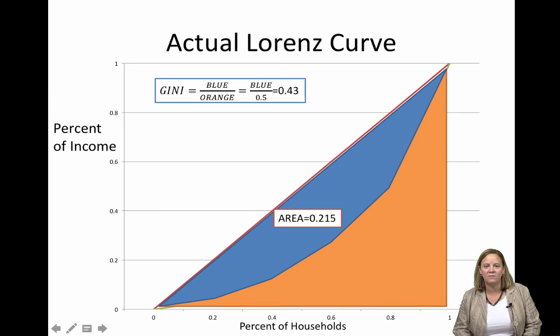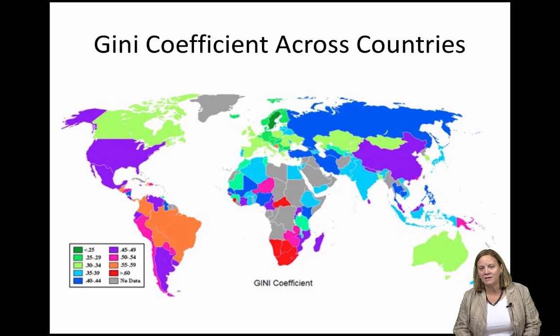This world map shows countries in different colors corresponding to different Gini coefficients. The U.S. has a Gini coefficient of approximately 0.4. Some countries in Latin America and Africa, shown in orange and red, have greater inequality with Gini coefficients around 0.5 to 0.6. European and Scandinavian countries, shown in green, tend to have Gini coefficients in the range of 0.25 to 0.35.